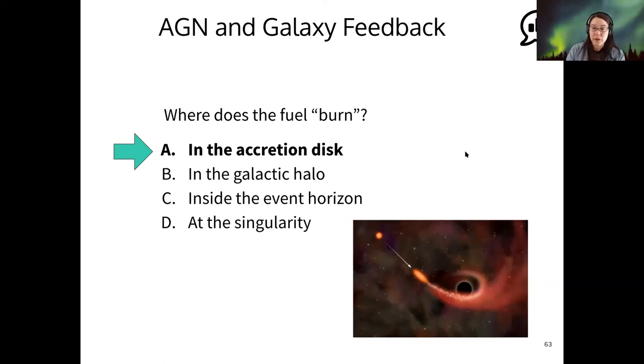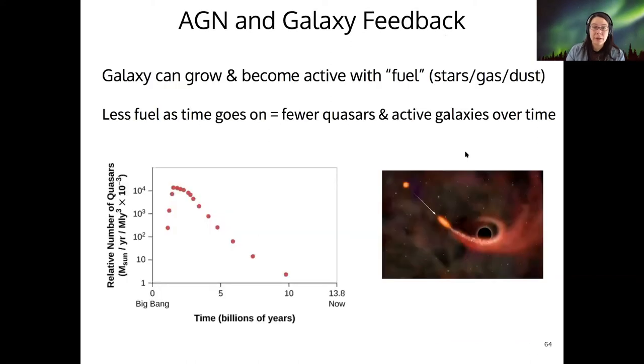So all of the fuel in the accretion disk doesn't stay there forever. Over time, that'll become incorporated into the mass of the black hole, just like you said in the chat question a little bit ago. And so over time, you have less fuel because there's less and less of this raw material to eat and also less and less galaxy collisions happening. So over time, we see fewer quasars and fewer active galaxies.